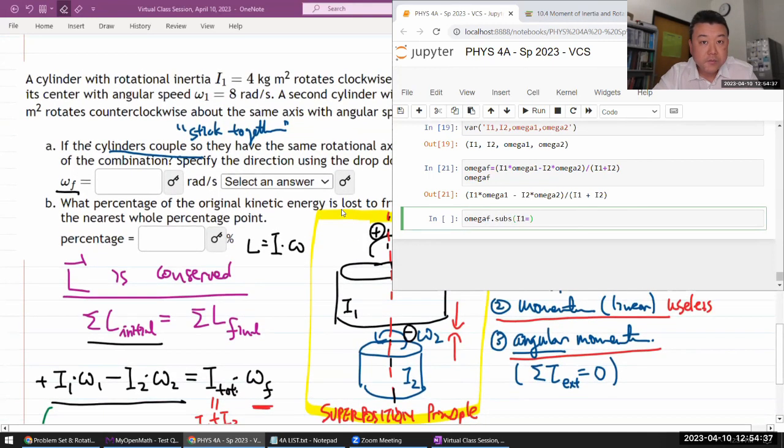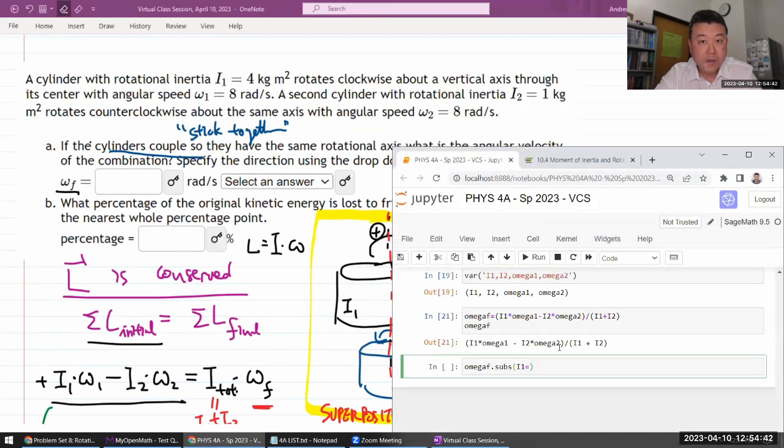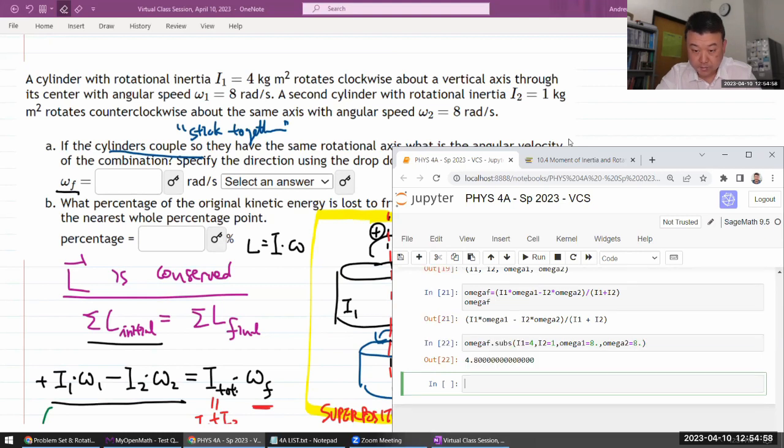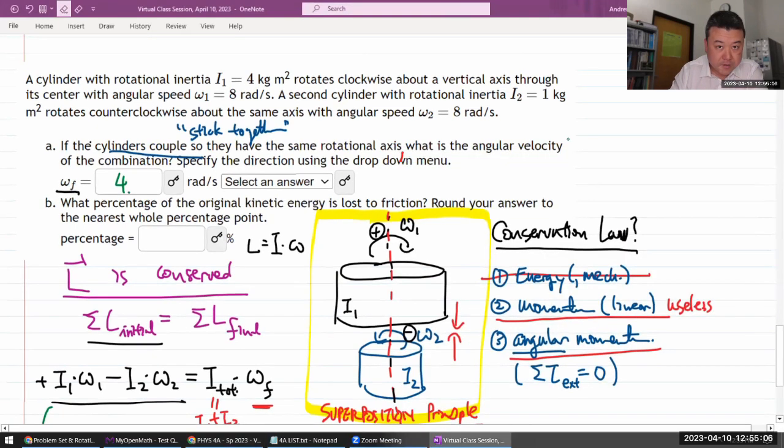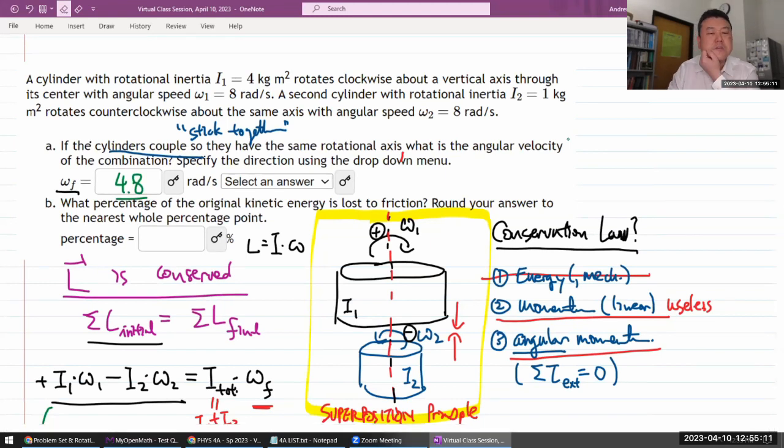Substituting in, I1 is 4, I2 is 1. Again, I'm just double checking they are all in basic SI units. Omega 1 is 8 radians per second, basic SI units. Omega 2 is 8 also. Yeah, I had a feeling I had to get a positive number this way. That's why I defined clockwise as positive. So 4.8 is the number we have here, 4.8 radians per second.